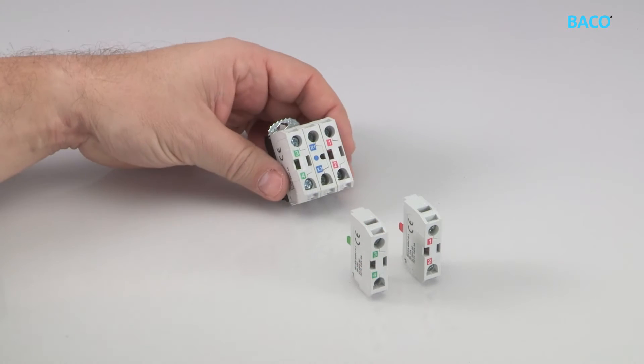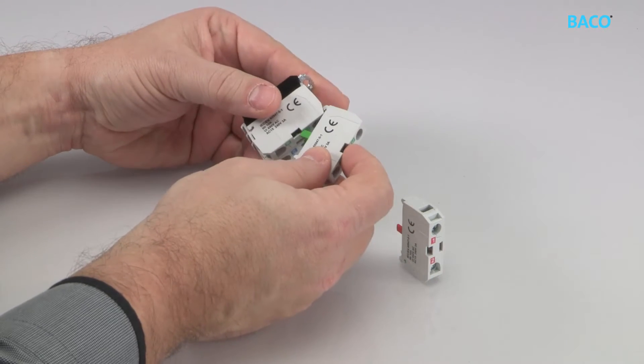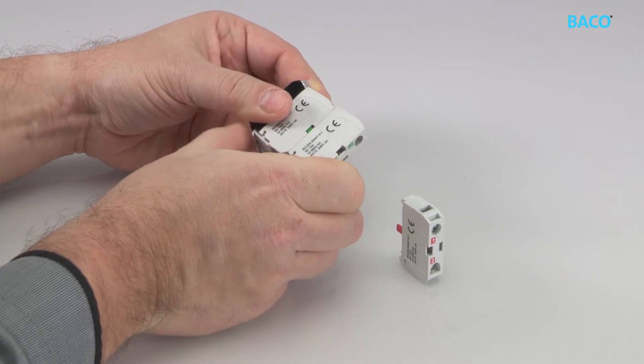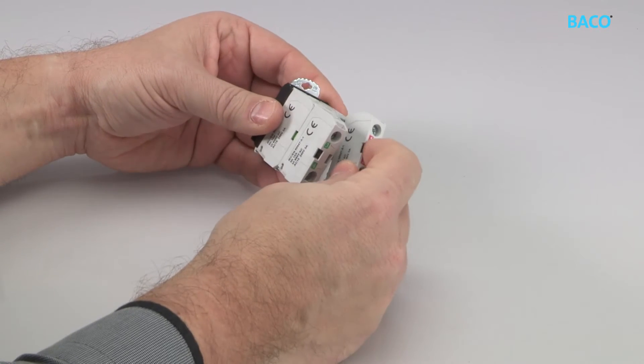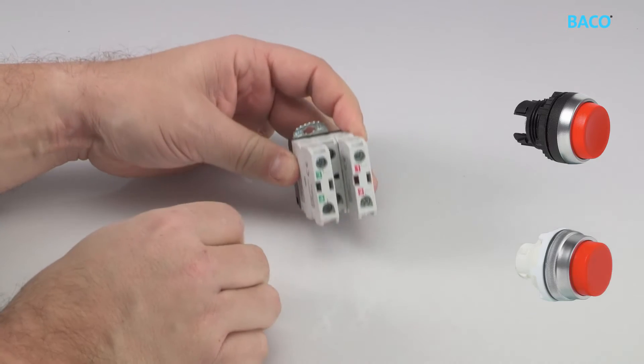Our contact blocks are stackable which gives more options for variety. Our products are great because you can use the same contact blocks with either BACO 22mm heads or BACO 30mm heads.